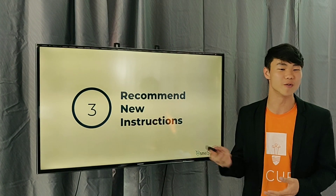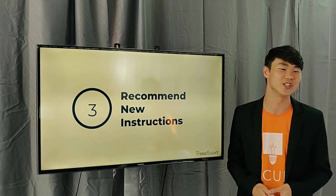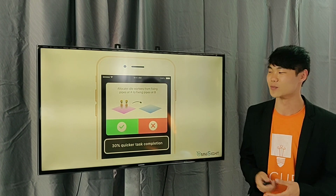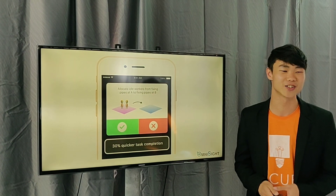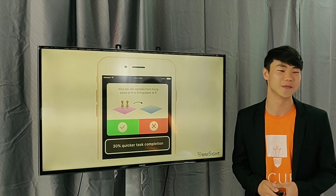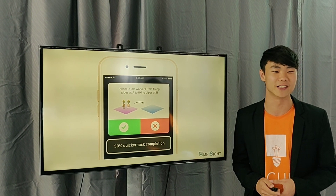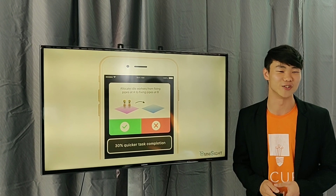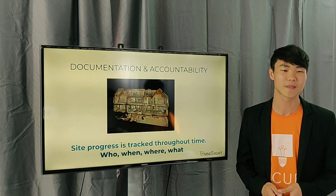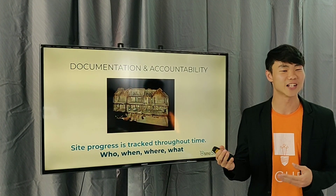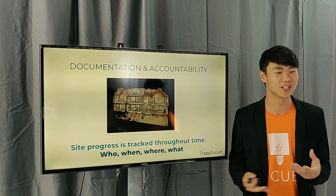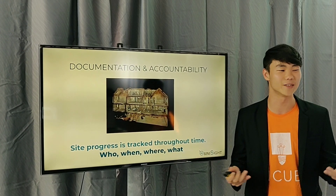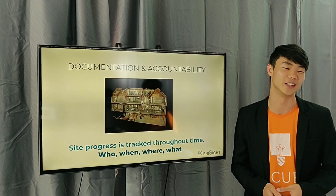It's not enough to just know where the risk areas are — we want to know what to do. So we recommend new instructions as a prompt, as you saw earlier. The final decision is still made by humans because of liability issues. There's also a valuable side effect: documentation and accountability, because we know who is doing what, when, and where.